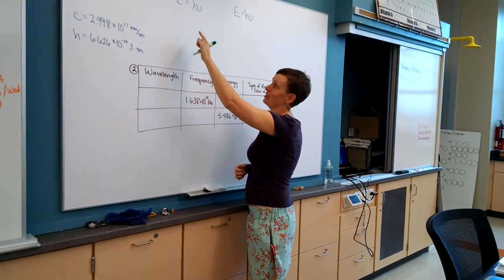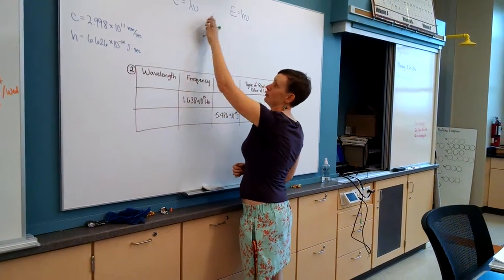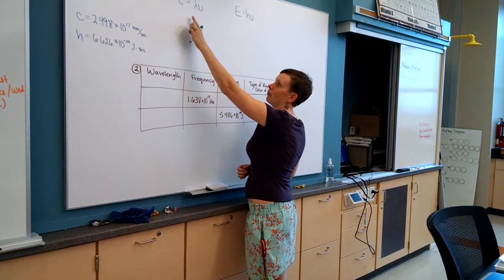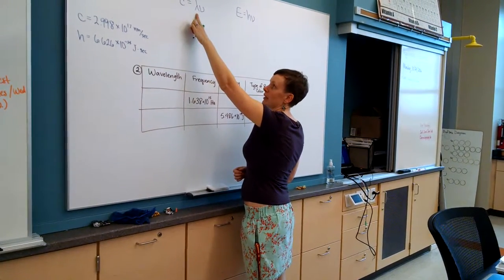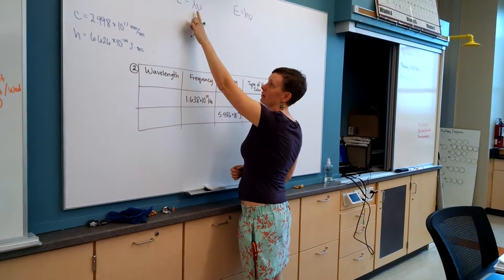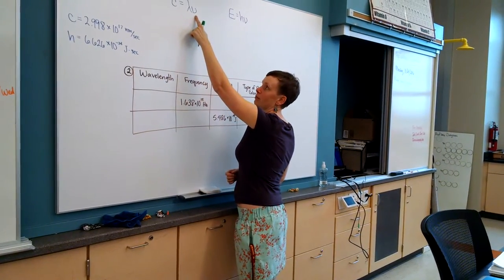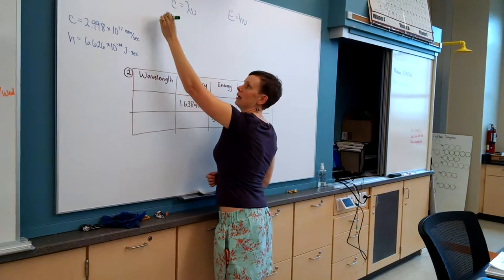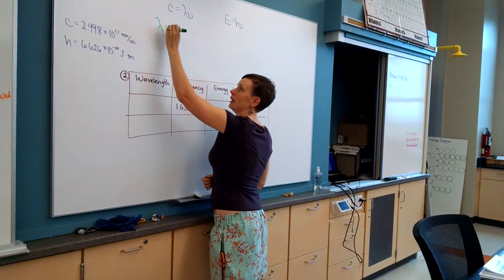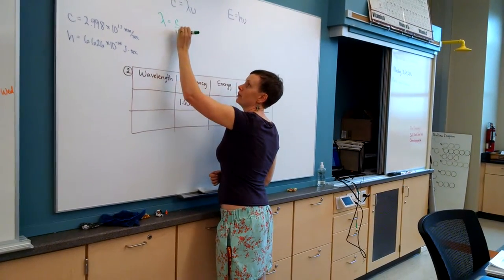In the first pre-lab question, we had to rearrange two equations. For part A, we wanted to rearrange this one solving for wavelength. So if we want wavelength by itself, we're going to divide both sides by the frequency, and we're going to get wavelength equals the speed of light over frequency.